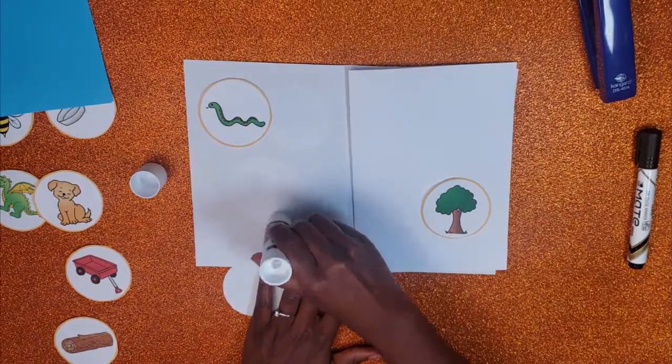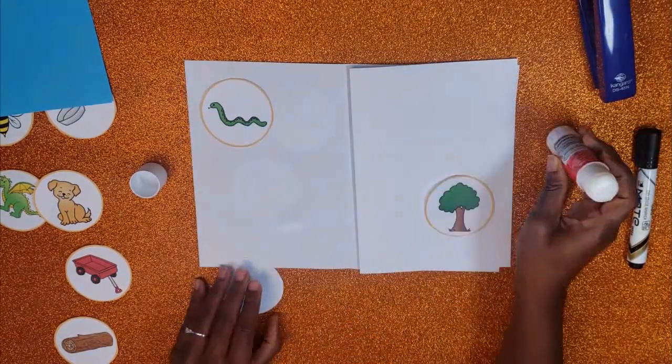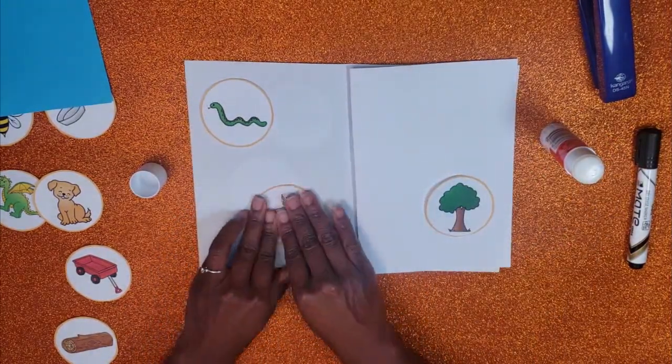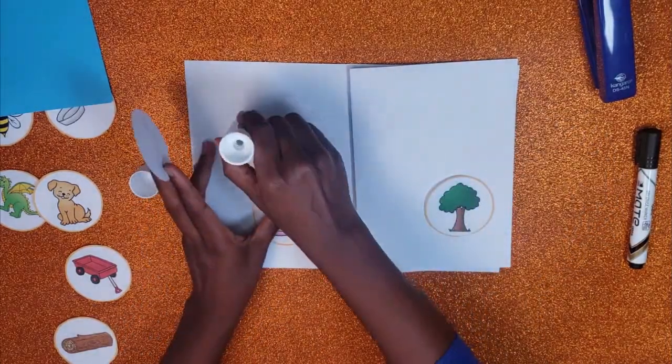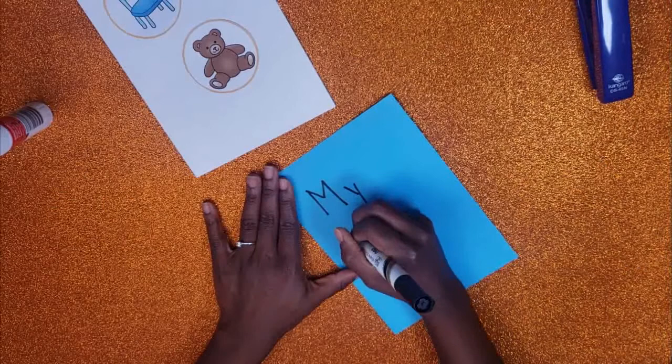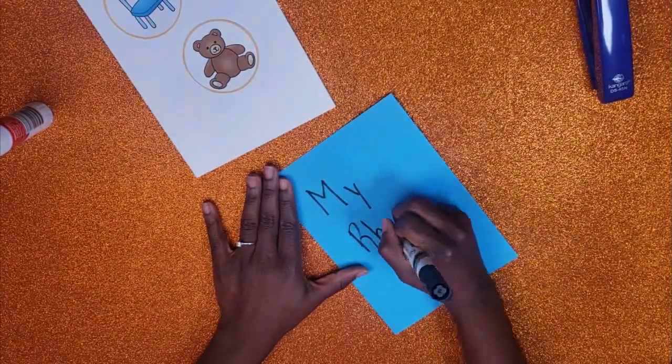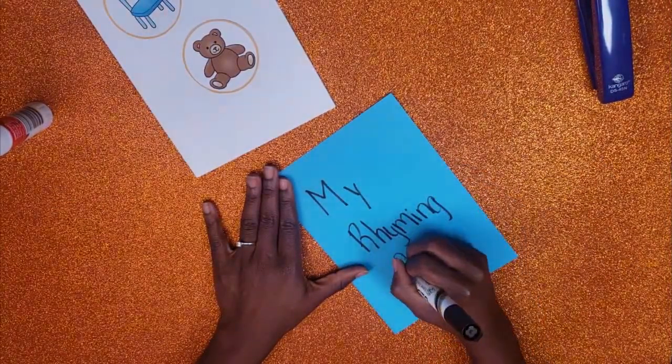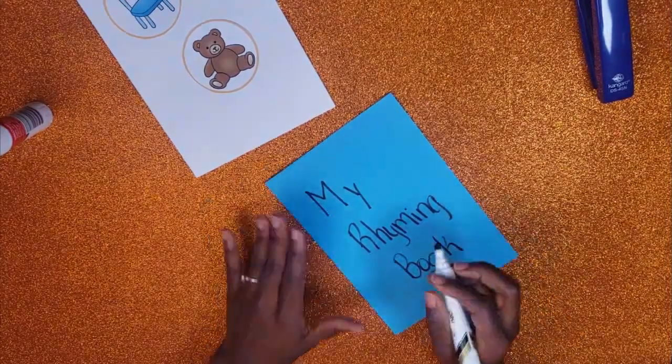Continue with this simple method of presenting three options and having your child identify the two that rhyme until they've made their book. When they're done gluing all their rhyming pairs, you can write the title on the cover page. Be sure to make the text slightly smaller than mine so that there's space for their name as the creator.